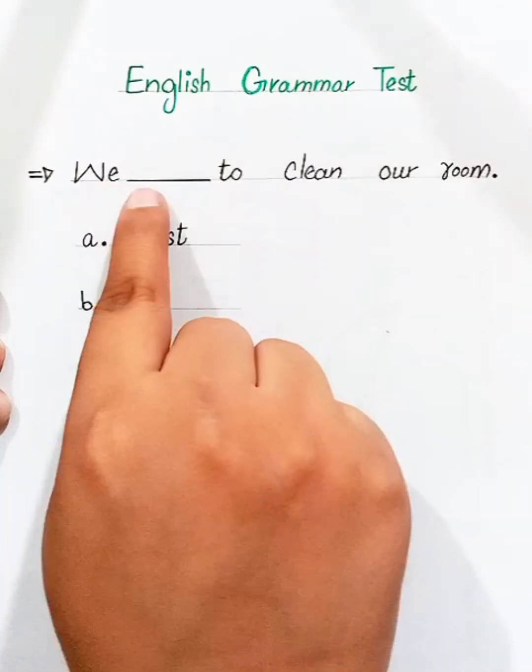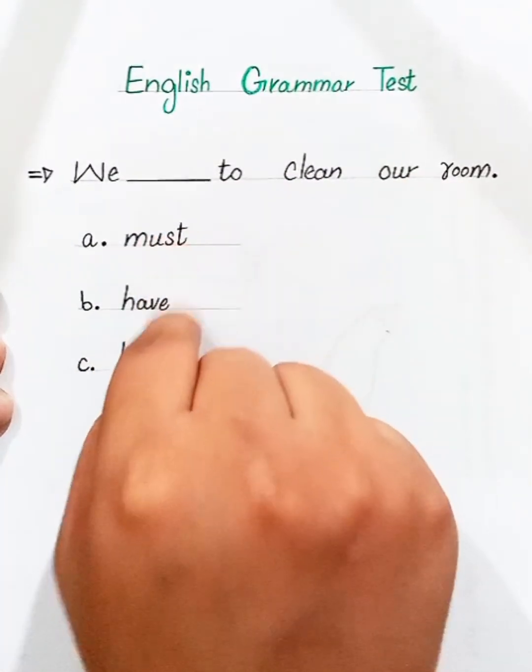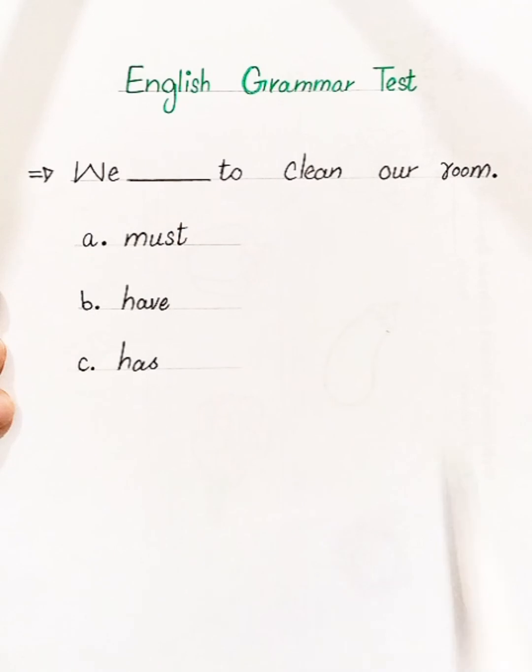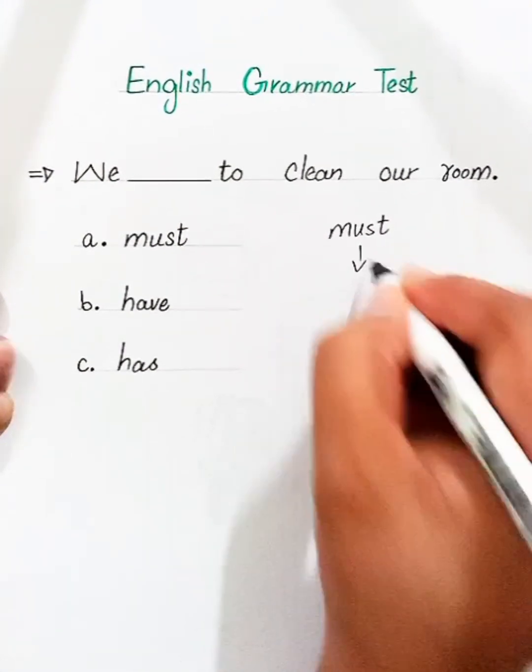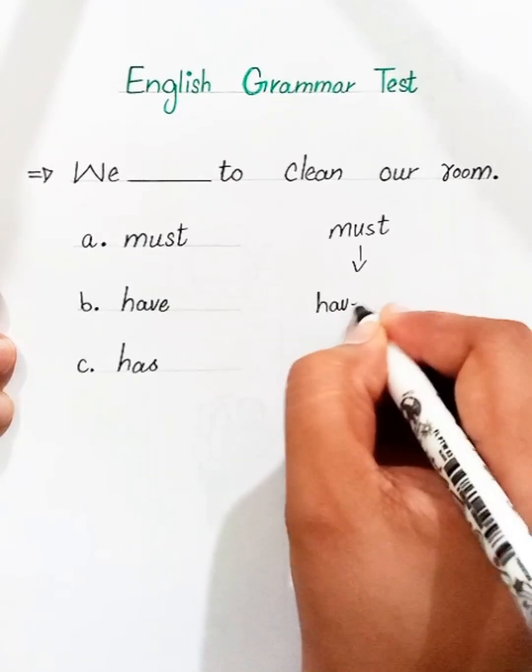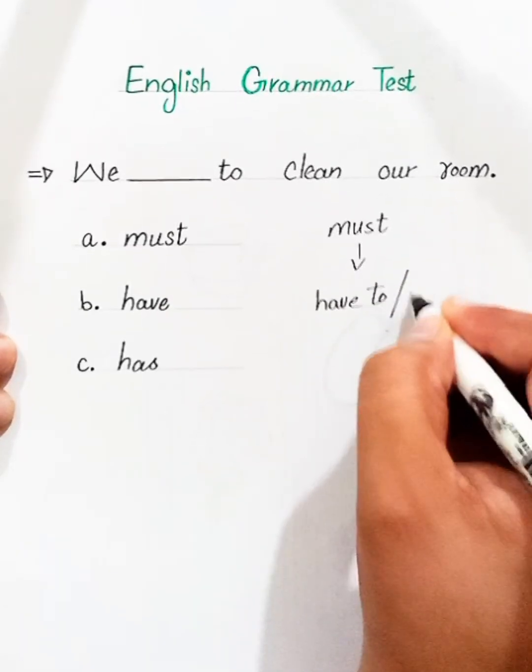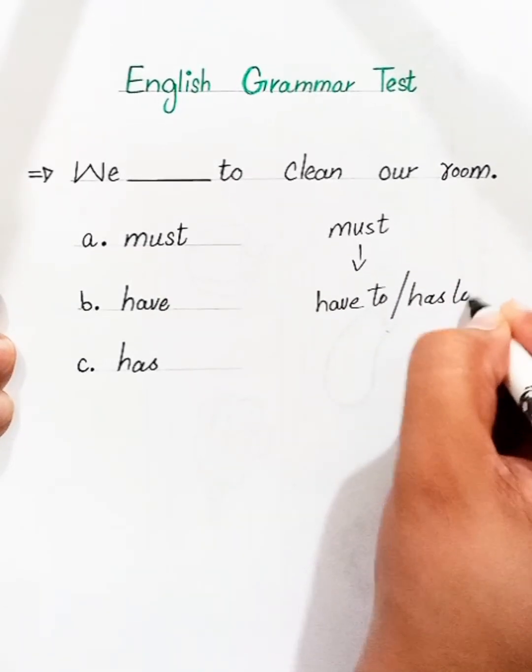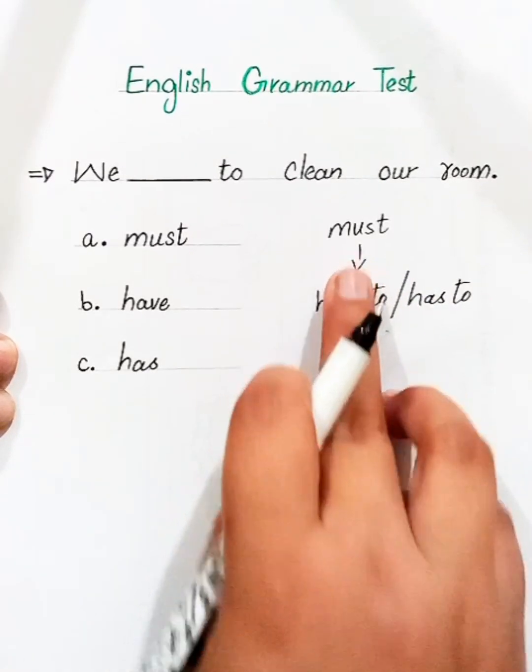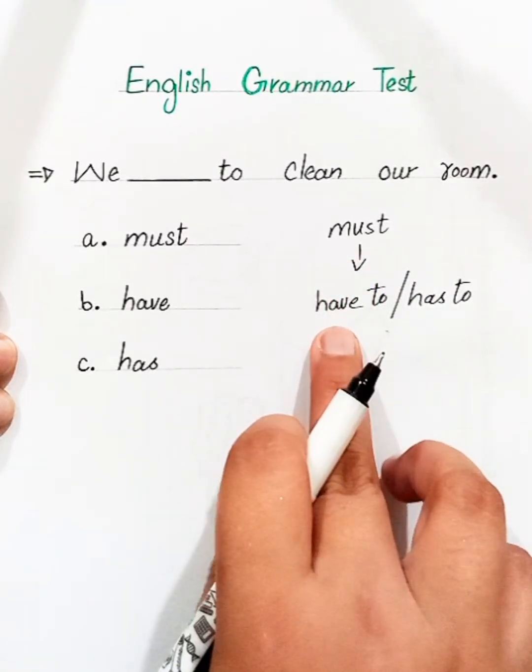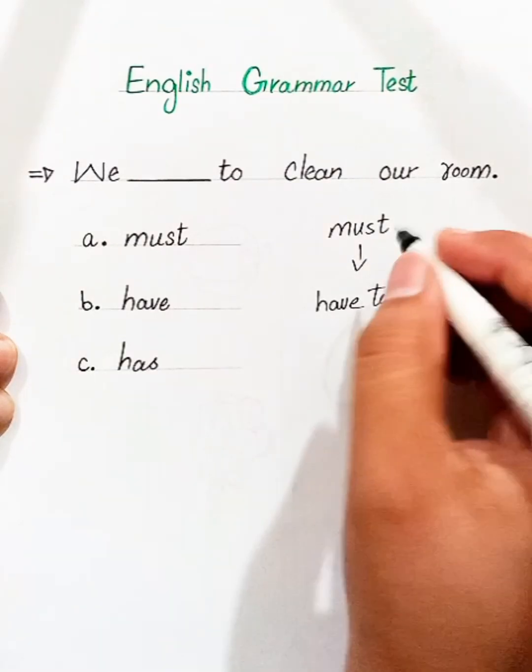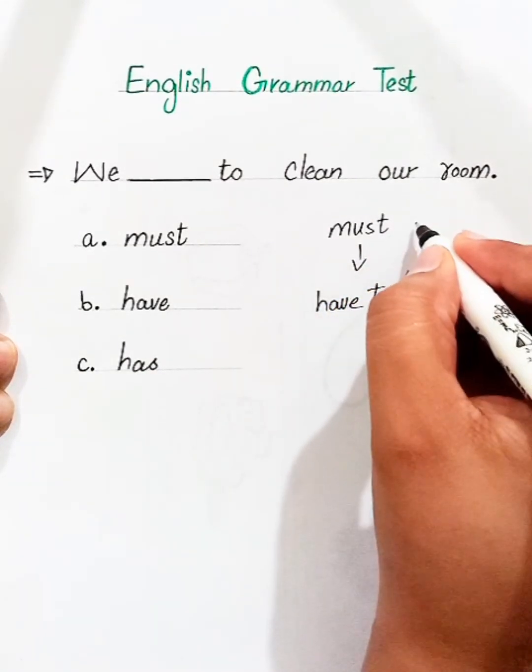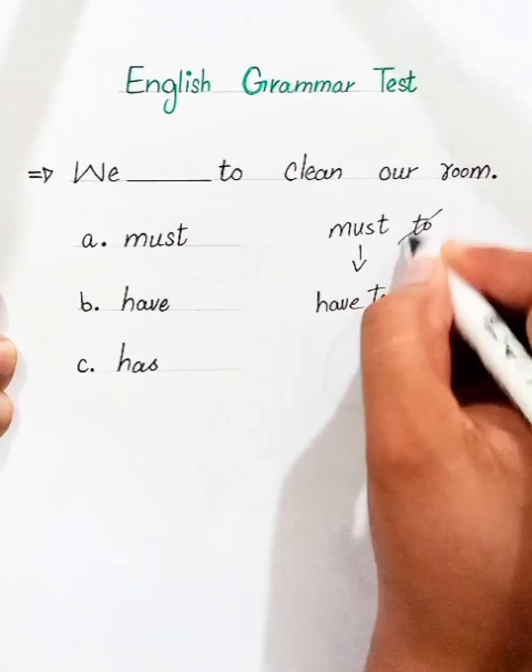We blank to clean our room. Must, have, has. Listen guys, the word must is equal to have to and has to. The word must has the same meaning as have to and has to, but the word must doesn't go with to.